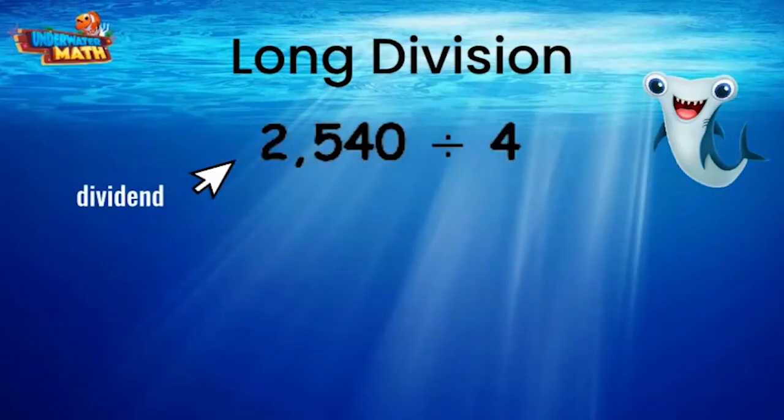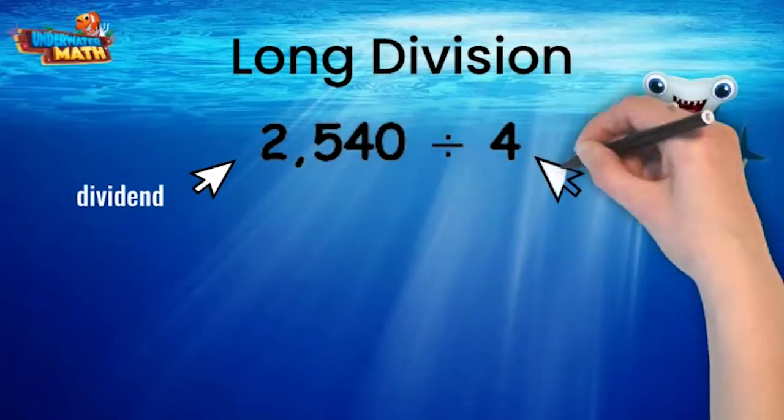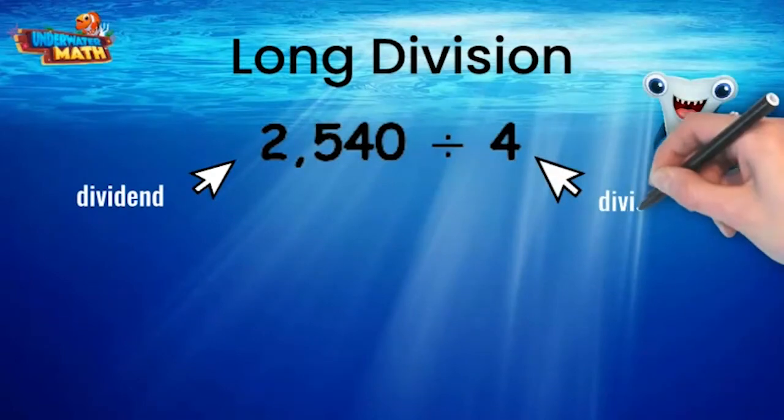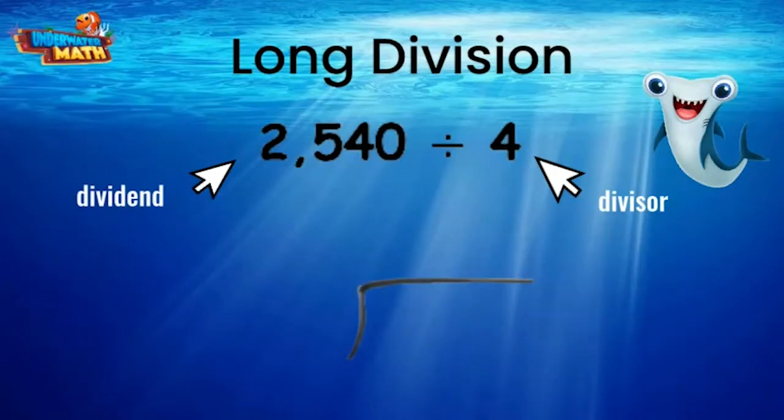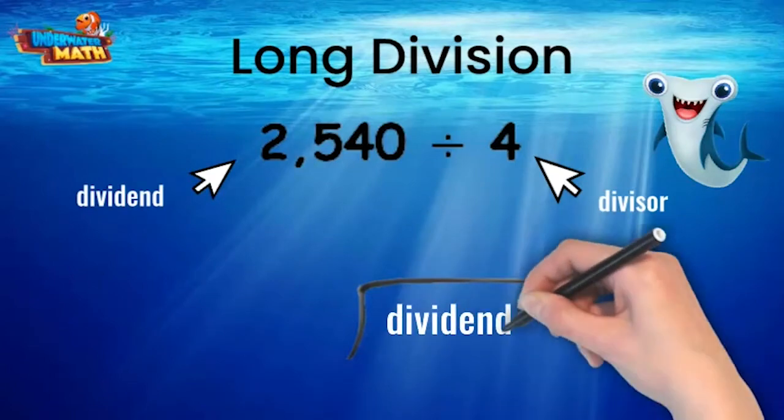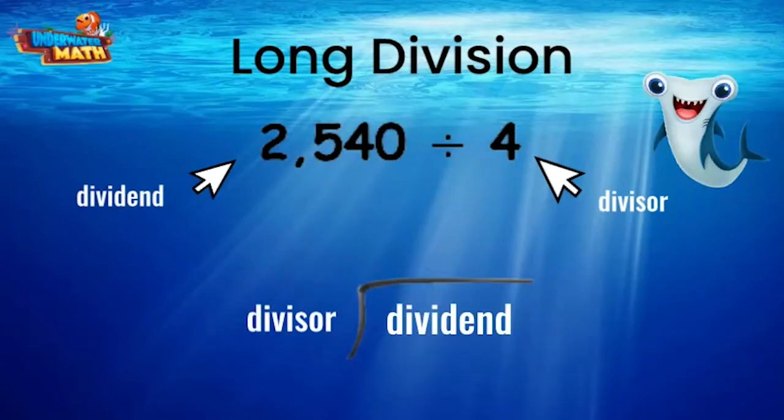number in a division problem is called the dividend, and the second number is the one that does all the dividing, so we call it the divisor. When we do long division, we use this symbol which I like to call the division house. The dividend gets to go inside the house and the divisor stays outside to do all the dividing.